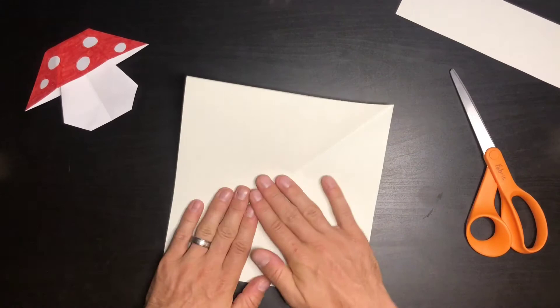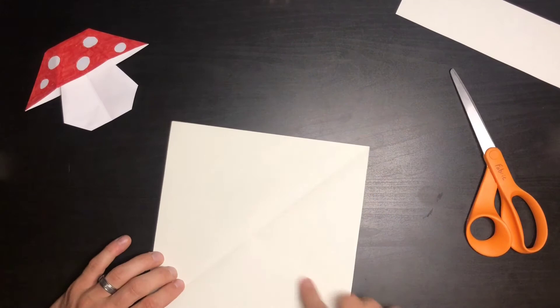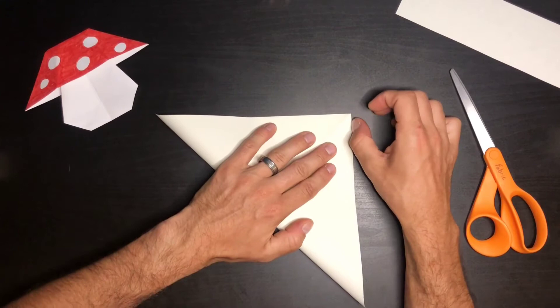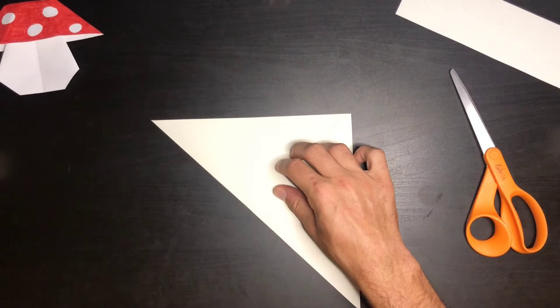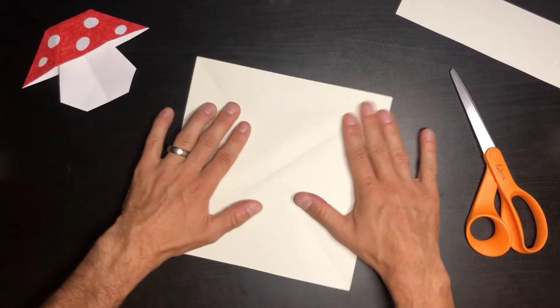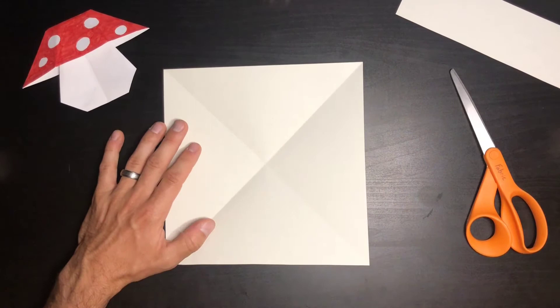What we're going to do is we're going to open it back up and we're going to fold this corner to this corner so that we have crisscross seams on our piece of paper. Let's get that lined up corner to corner and get the seam pressed and open it back up. So now you should have an X of a seam or crease in the paper.